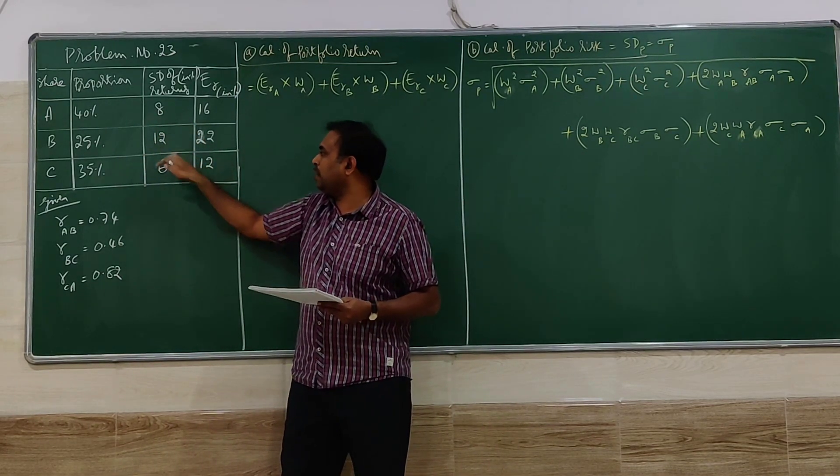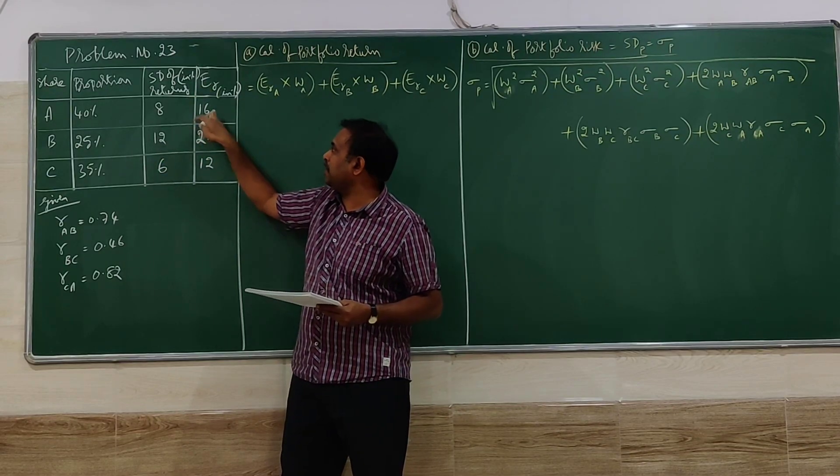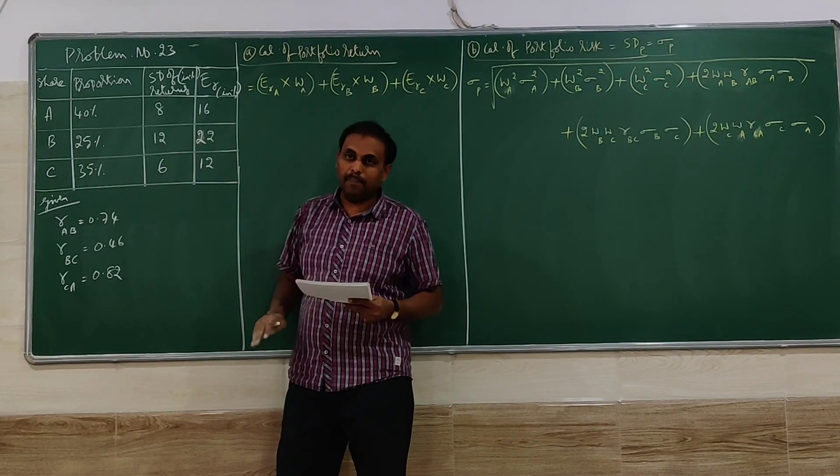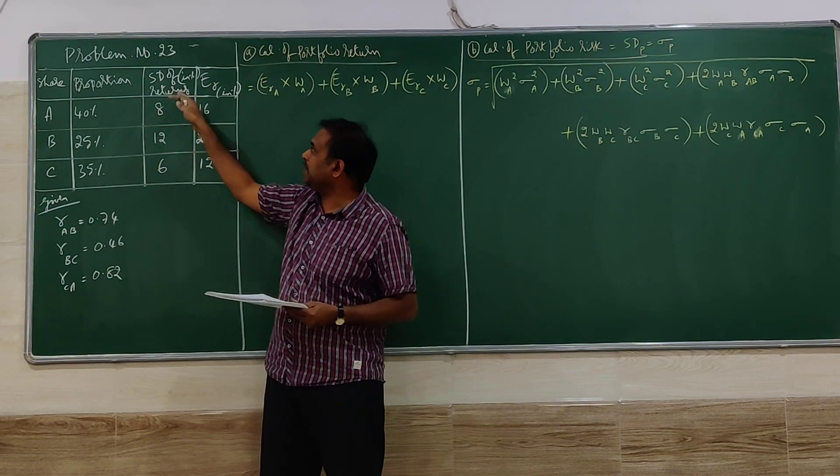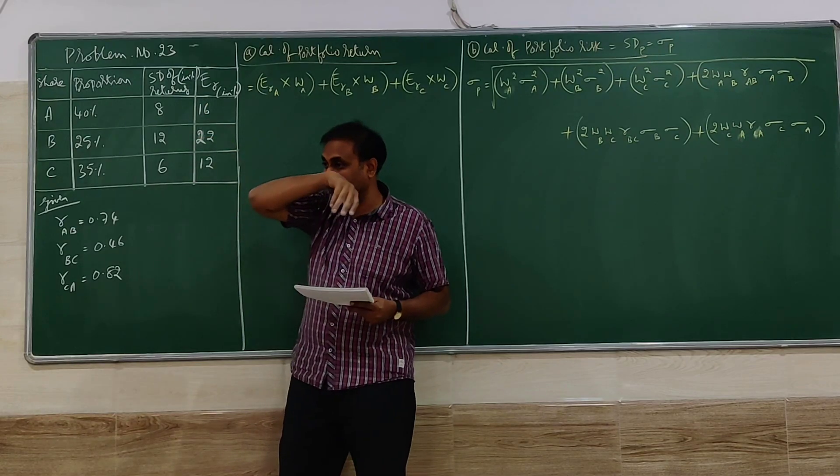SD of returns: 8, 12, and 6. Expected return: 16, 22, and 12. In the problem I have mentioned as in percentage, SD in percentage and ER in percentage.